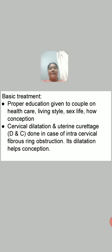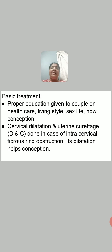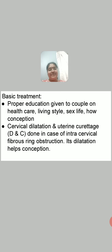These health improvement efforts and improvement in lifestyle should be continued for about 6 months. Most females conceive naturally by following these proper education and instructions given by the doctor. Within 3 to 6 months, they usually conceive naturally.